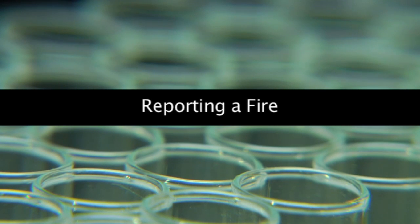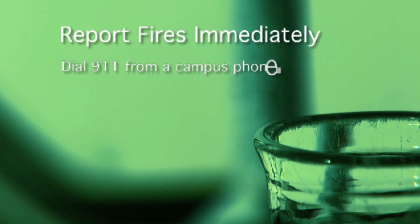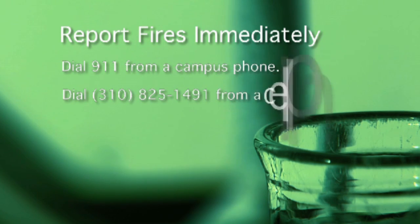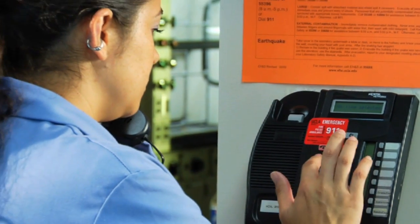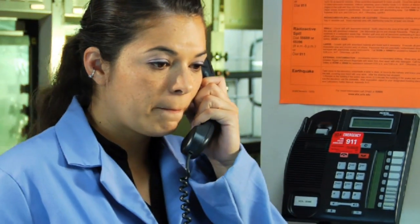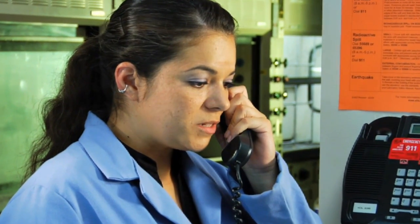When a fire is discovered, regardless of its size, report it immediately. From any campus phone, dial 911. From a cell phone, dial 310-825-1491. Be prepared to tell the operator vital information, such as what is on fire, where the fire is located, if there are any injuries, and if you are going to try to use a fire extinguisher.